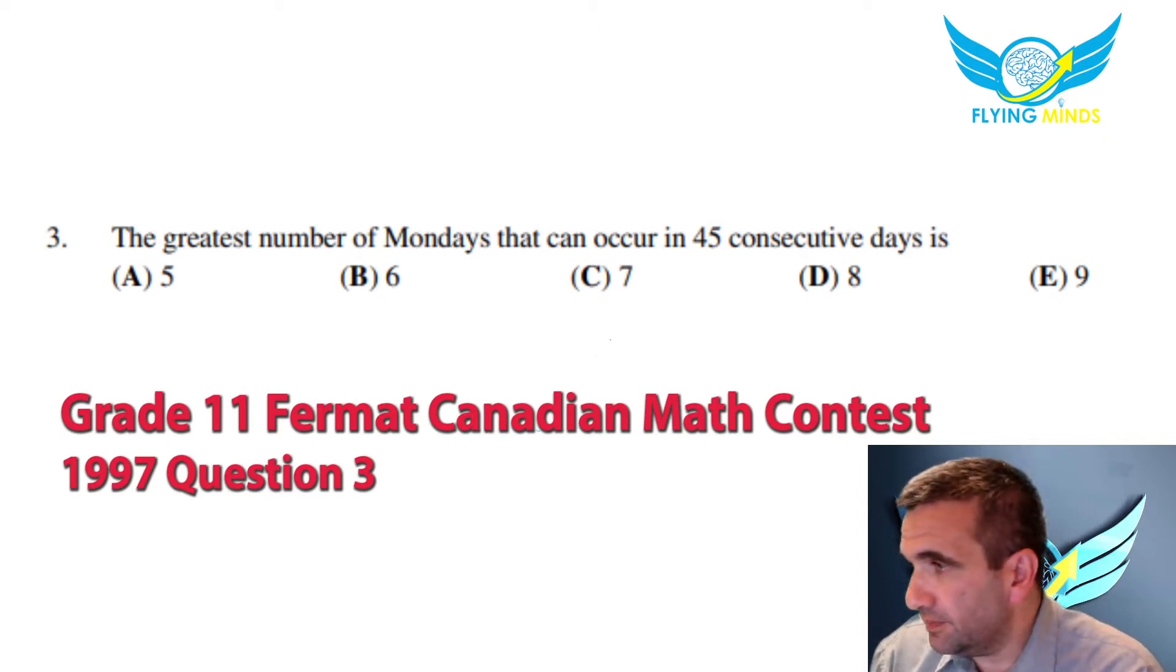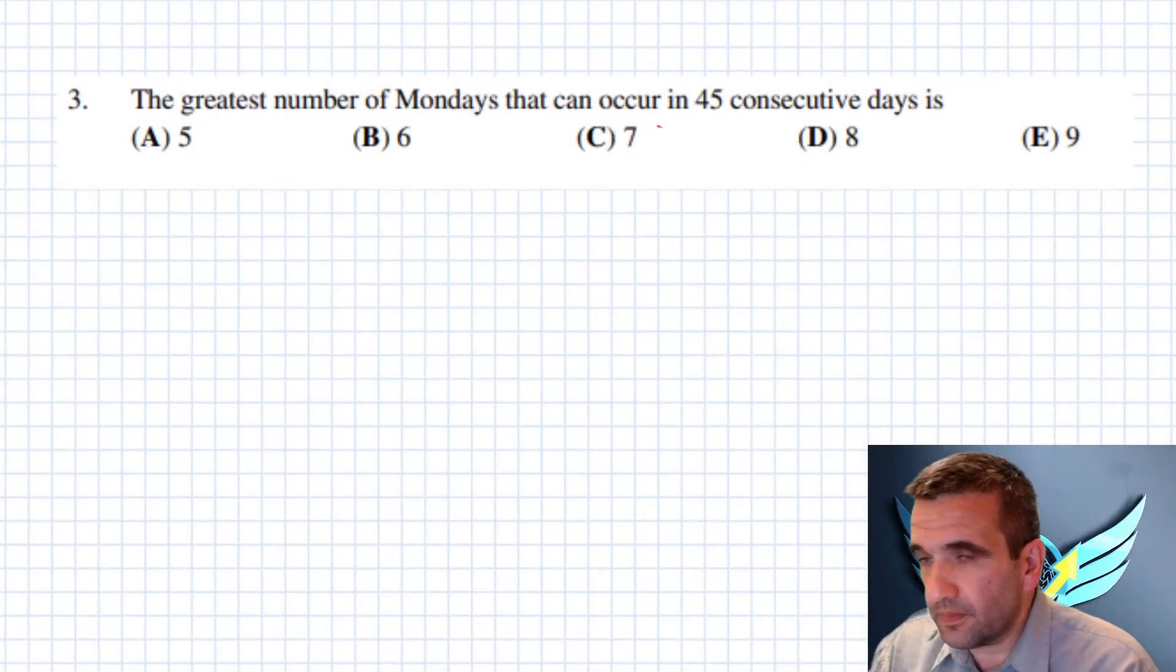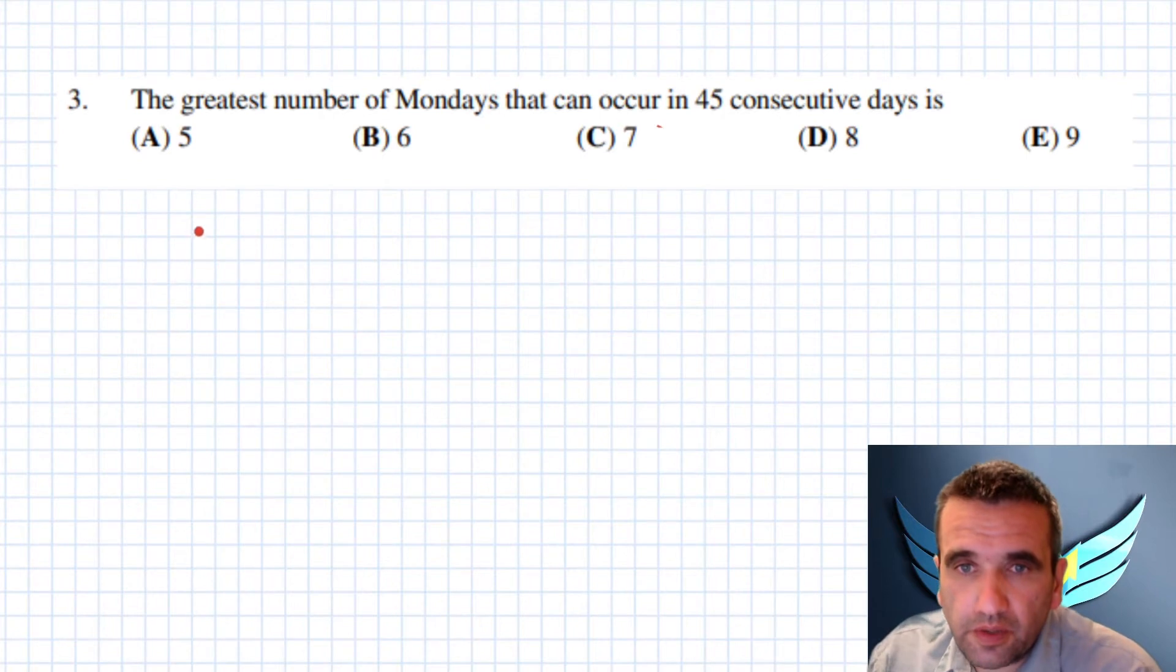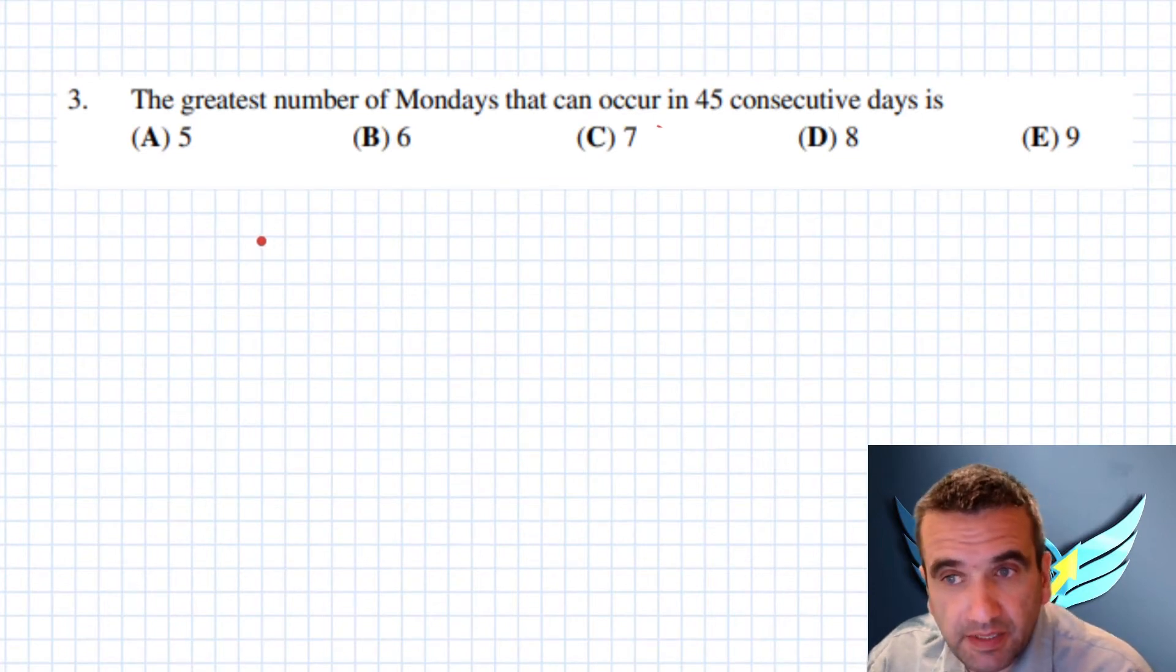Okay, the greatest number of Mondays that can occur in 45 consecutive days is - so we need to find the maximum number of Mondays we can have in 45 consecutive days.